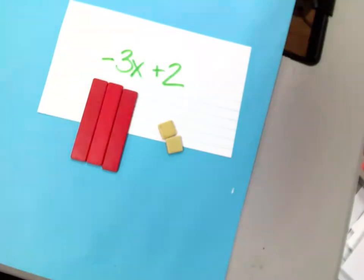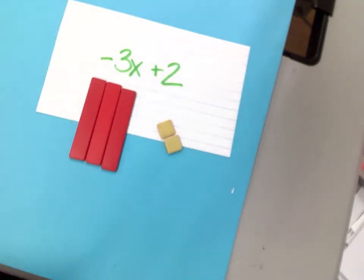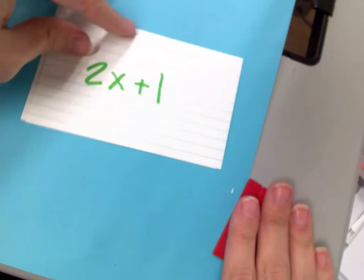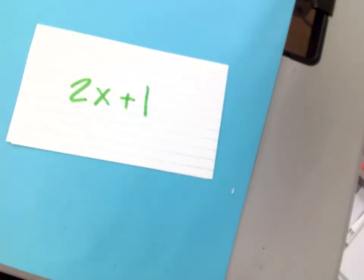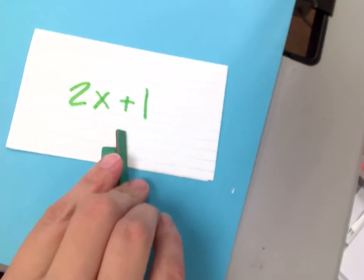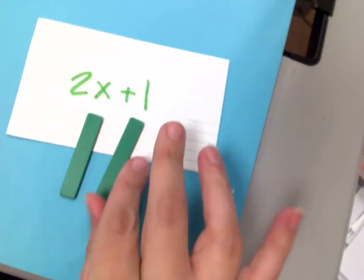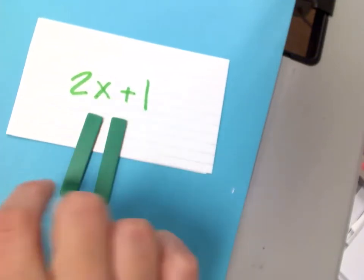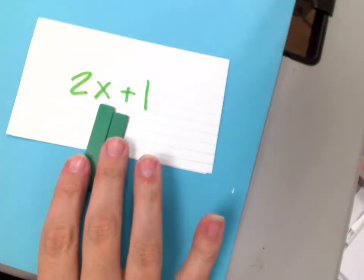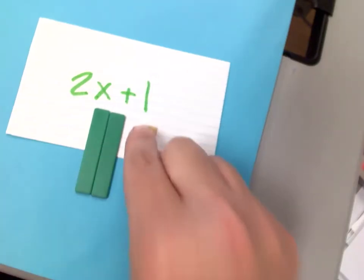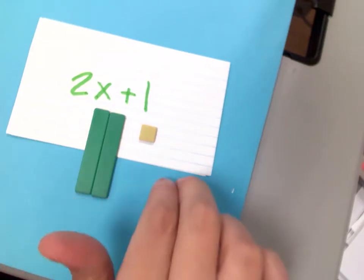So this would be negative 3x plus 2. Okay, let's do another one. 2x plus 1. Well, I have two x's, okay? So that's the same thing as saying 2 times x because I have two groups of x, of x, plus 1. So then I'm going to have one constant that's positive. So this would be 2x plus 1.